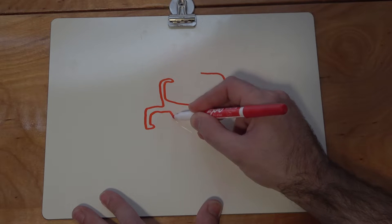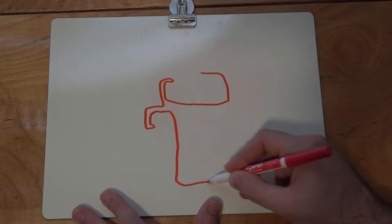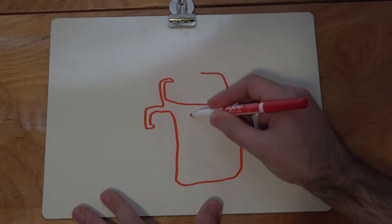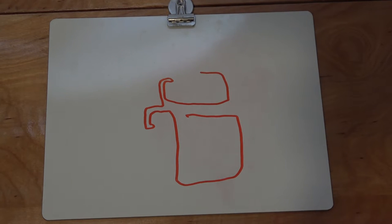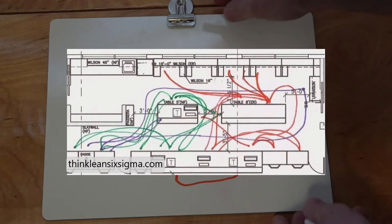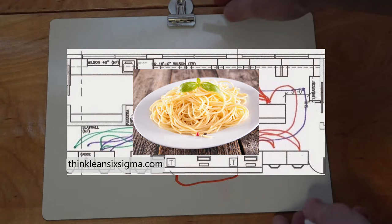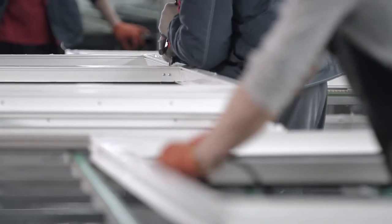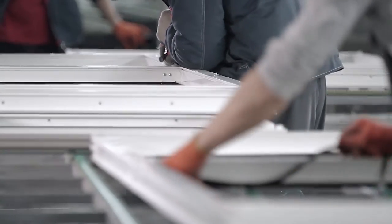In large-scale manufacturing, long walk patterns like this are considered very wasteful, so engineers use a specific tool to visualize the problem and make improvements. Enter the spaghetti diagram. A spaghetti diagram is typically used to trace the movement of a person or thing through a process. In my case, I'm interested in the walk pattern I have to take to get my clothes into the washing machine.